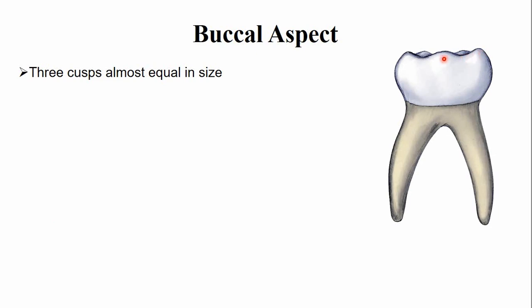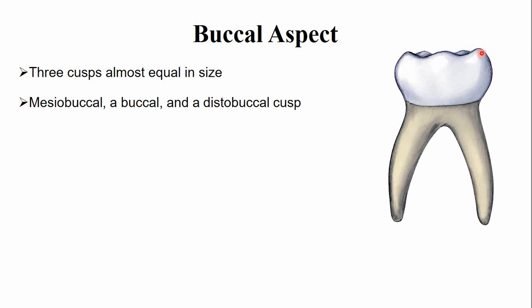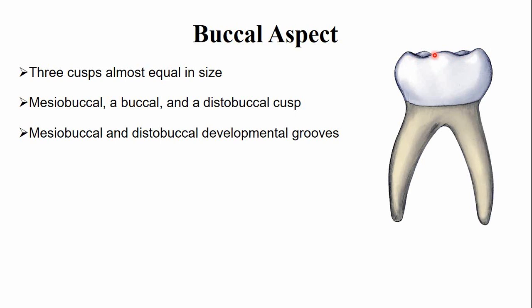From the buccal aspect, there are 3 cusps — the mesio-buccal cusp, the buccal cusp, and the disto-buccal cusp — and mesiodistally, these cusps are nearly equal in size. In between these three cusps, there are two developmental grooves: the mesio-buccal developmental groove, between the mesio-buccal and buccal cusps, and the disto-buccal developmental groove, between the buccal and disto-buccal cusps.